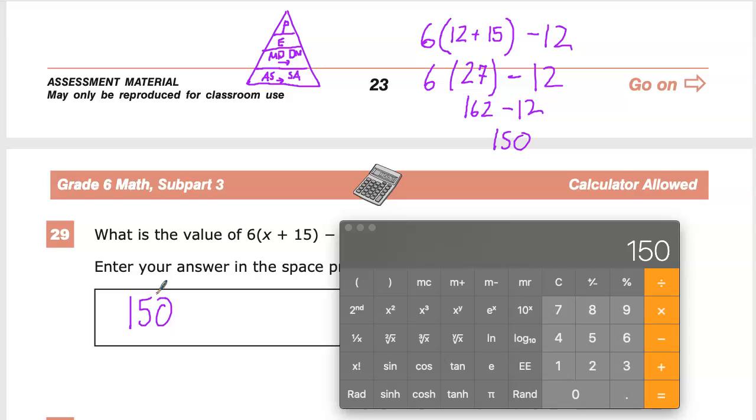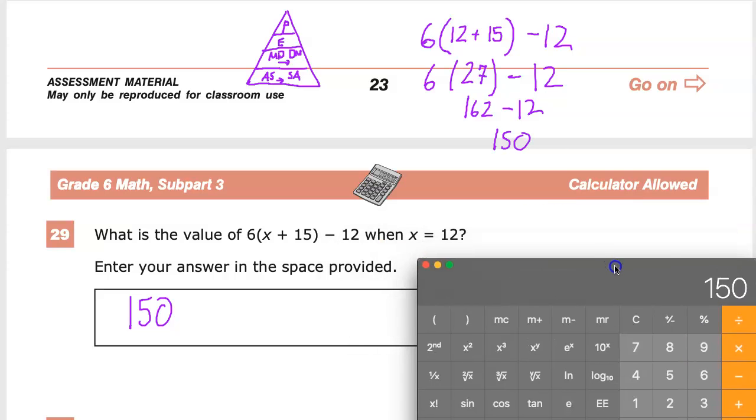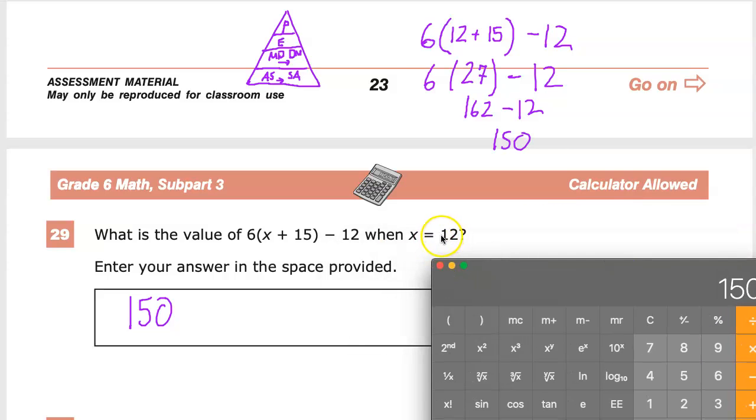Make sure that you write the answer in the space provided and don't just leave it on your paper or on scrap paper, because they won't give you credit if you don't put the answer down for them to see. So when you have this type and you're given a variable and they define it, just substitute the value in appropriately for wherever the variable is in the expression, and then work the expression out to its logical conclusion using the order of operations.